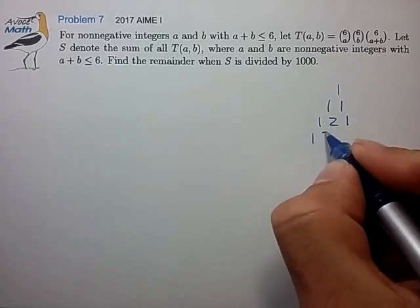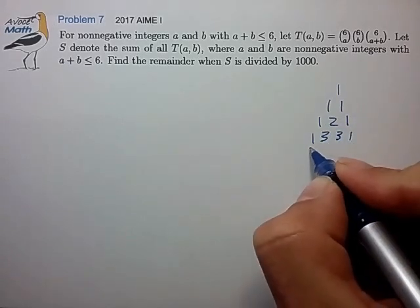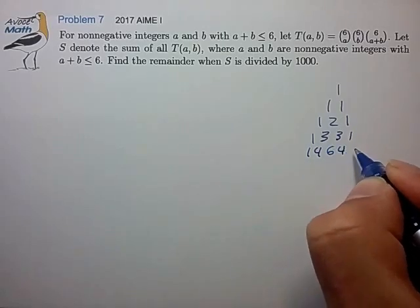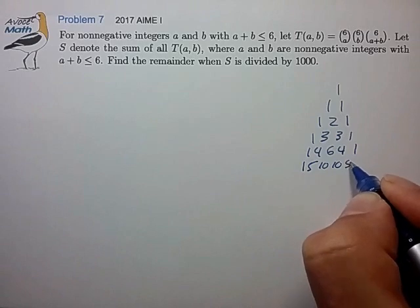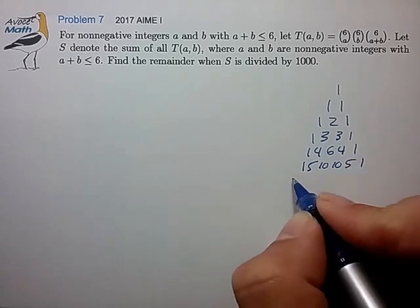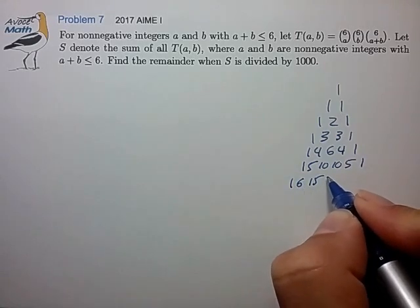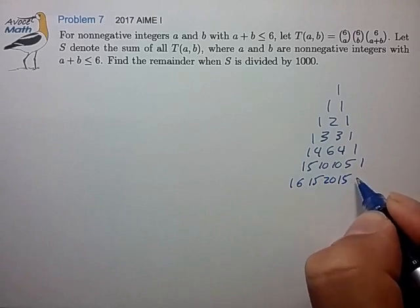That's the second row, the third row, the fourth row, the fifth row, and the sixth row of Pascal's triangle.